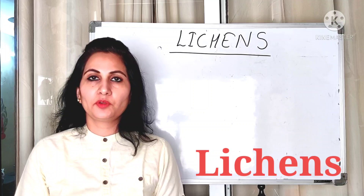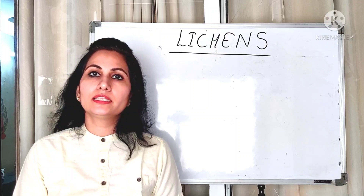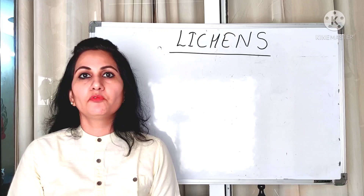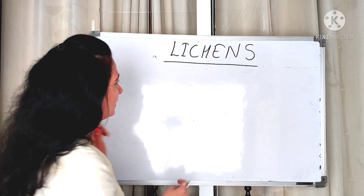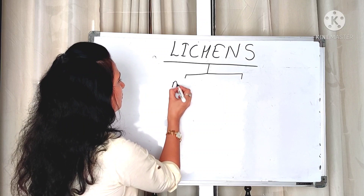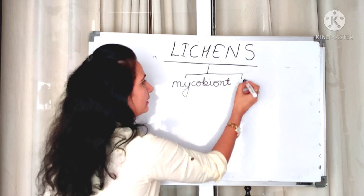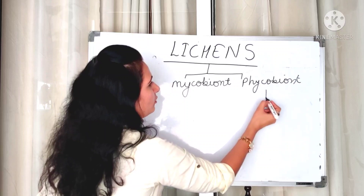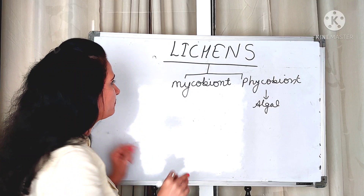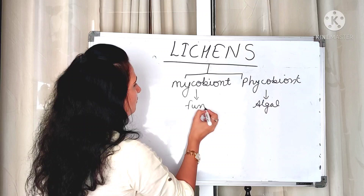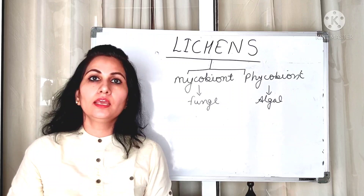In today's video lecture we are going to discuss about lichens. A lichen is basically a composite organism in which a fungus is living in very intimate relationship with a cyanobacterium or with a green algae. A lichen is a close association of two portions: one is the mycobiont and another is the phycobiont. The phycobiont is the algal portion or cyanobacterium, while the mycobiont is the fungal portion.